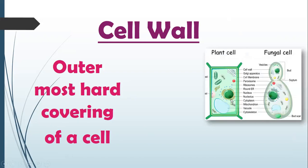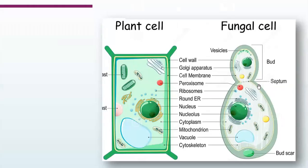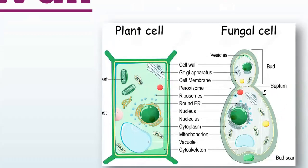Let's look at this diagram. This is a plant cell and a fungal cell. This is the plant cell — the outer covering you see is a cell wall. The outer hard covering is the same. Same is the case with the fungus cell. The cell wall gives the cell a fixed specific shape.